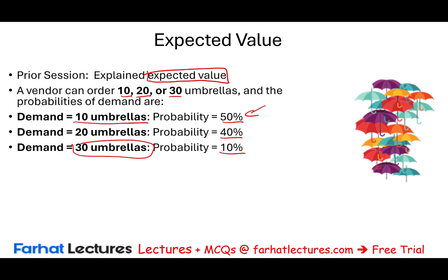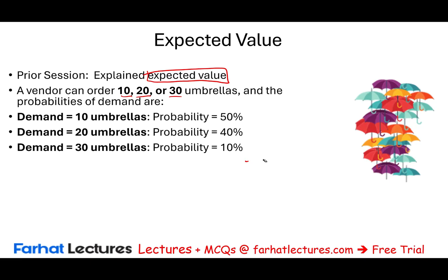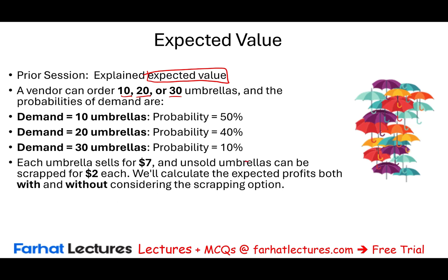This is the state of nature, and what the vendor is thinking about is rain — if it's going to rain a lot, there's more demand for umbrellas. The probabilities are 50%, 40%, and 10%, and they add up to 100%. Each umbrella can be sold for $7, and unsold umbrellas can be scrapped for $2 each. We're going to calculate the expected profit both with and without considering the $2 scrap value, just to see what that does to the bottom line.